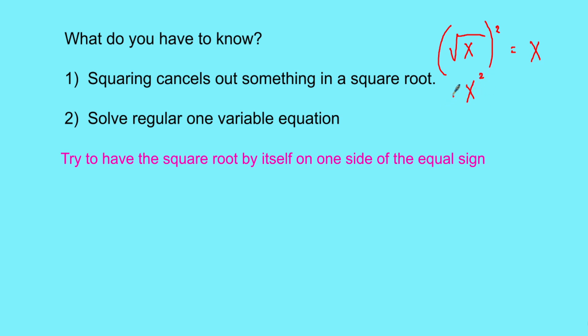Vice versa, if I have x squared and I square root that, again the square root and square cancel each other out, so it's just whatever's inside - it will just be x. That's your main go-to. The second thing you got to know is just how to solve one variable equations, which you should already know. And then the last major tip: try to have the square root by itself on one side of the equal sign.